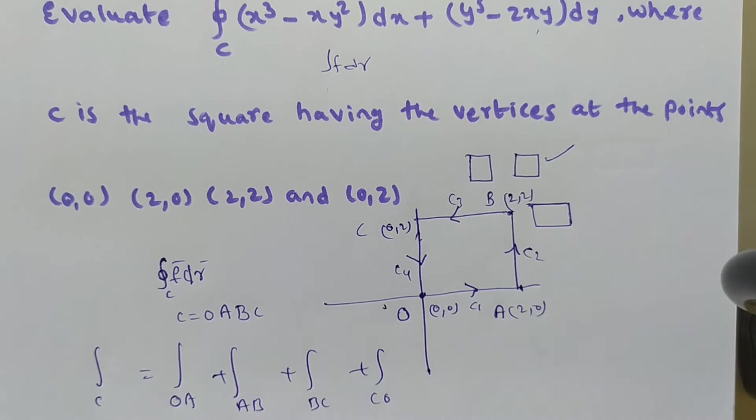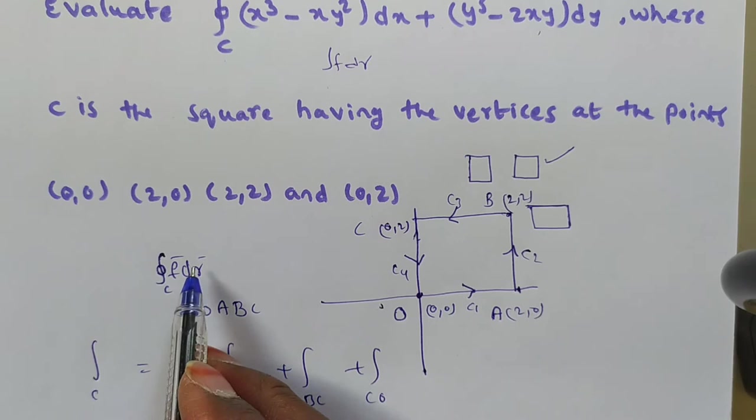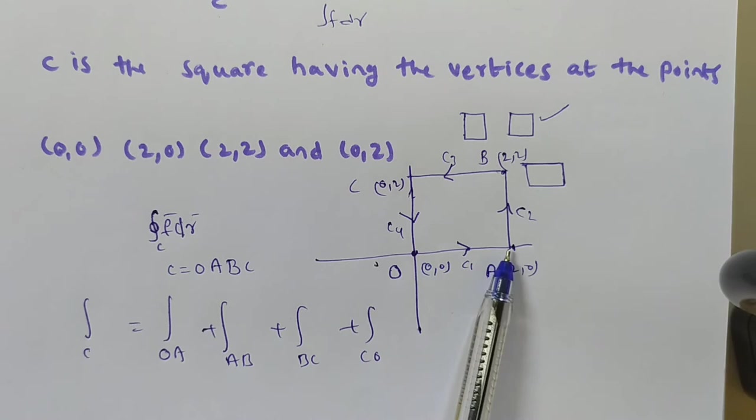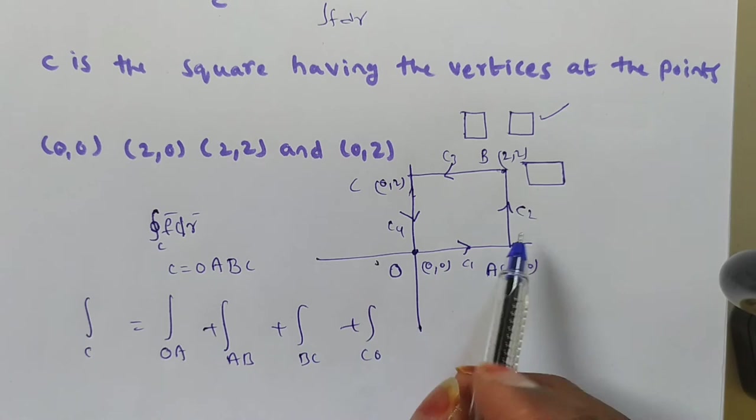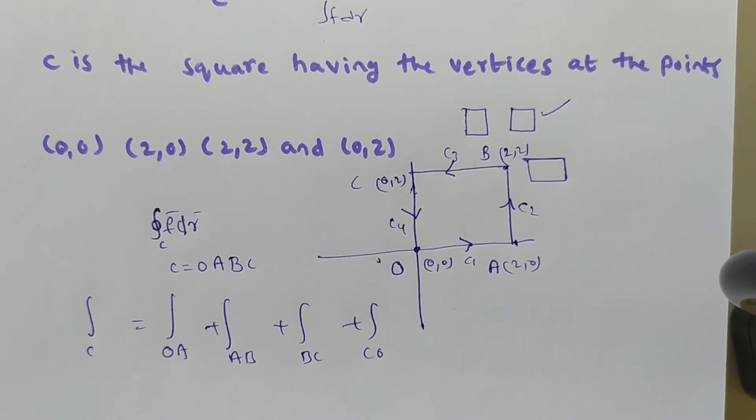Once again — to evaluate a circulation curve, we evaluate the line integral in the anti-clockwise direction. If a square or rectangle is given, we divide it into four parts: O→A + A→B + B→C + C→O. In your task, you have to follow the same procedure.